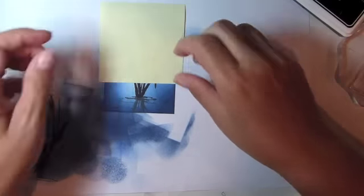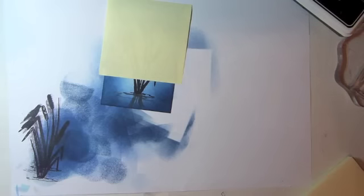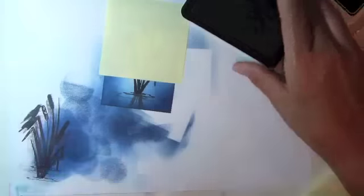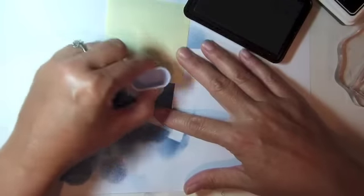Place a sticky note where you would like your horizon line to mask the sky and then sponge lightly using Gina K Blue Denim ink.